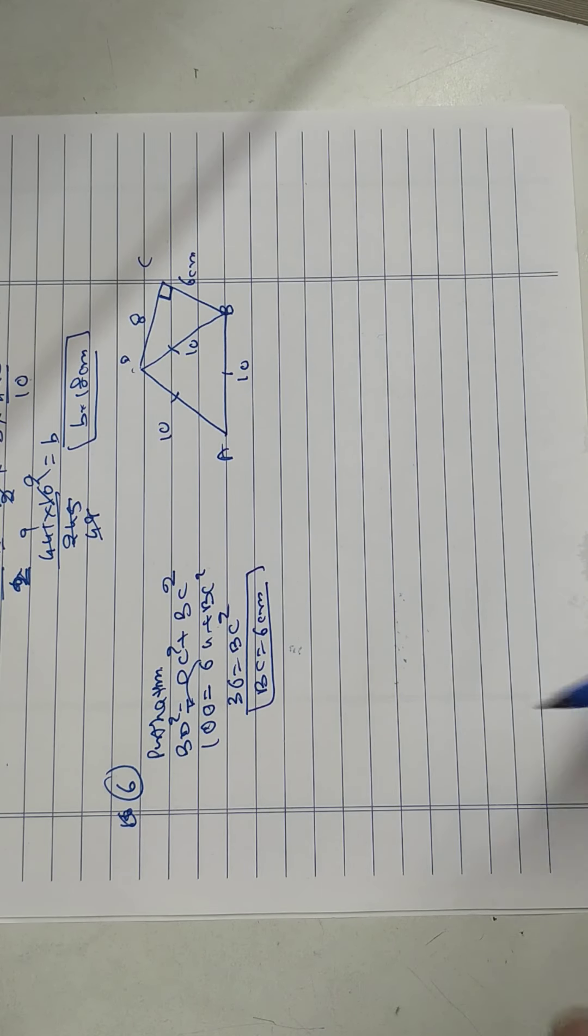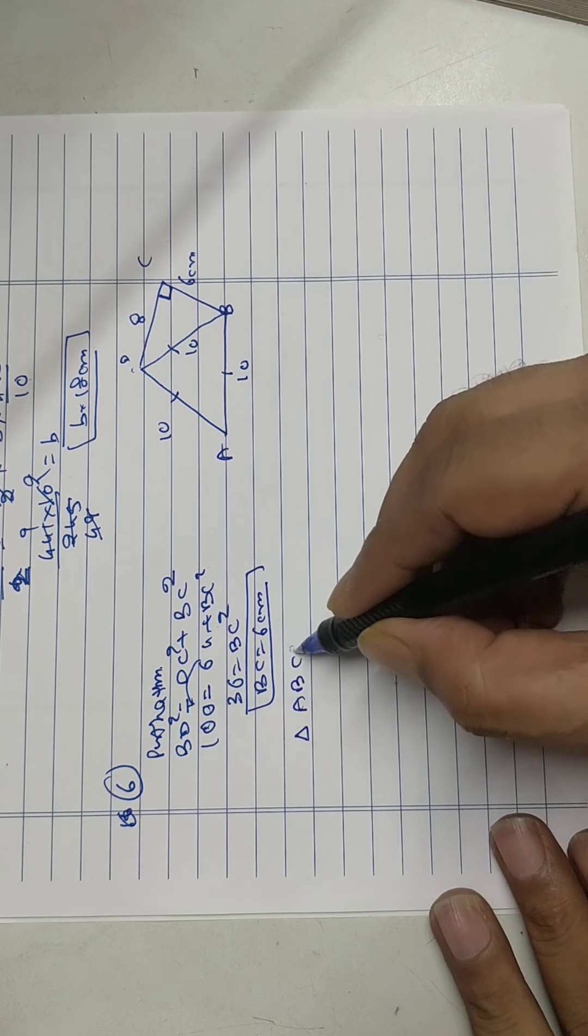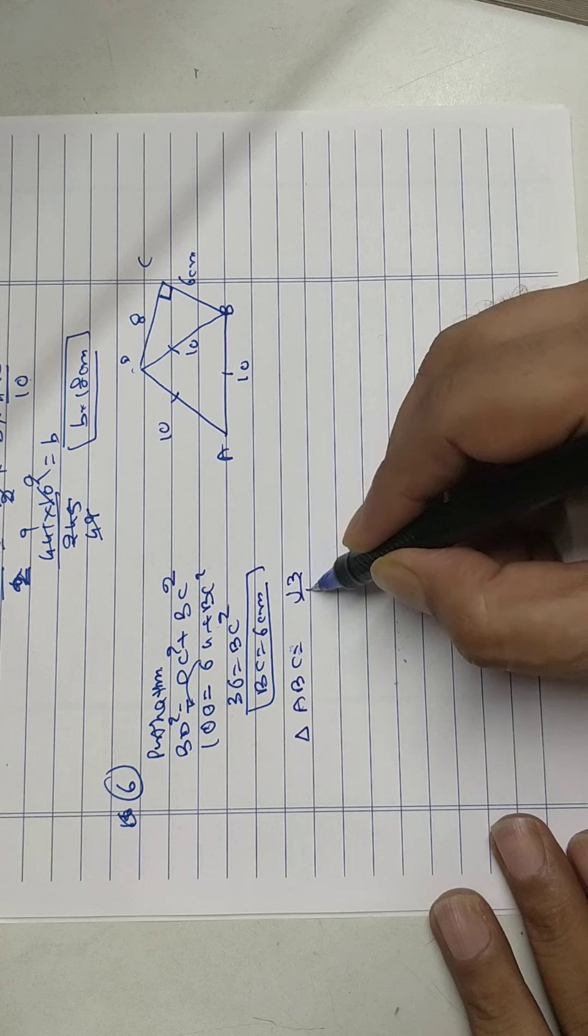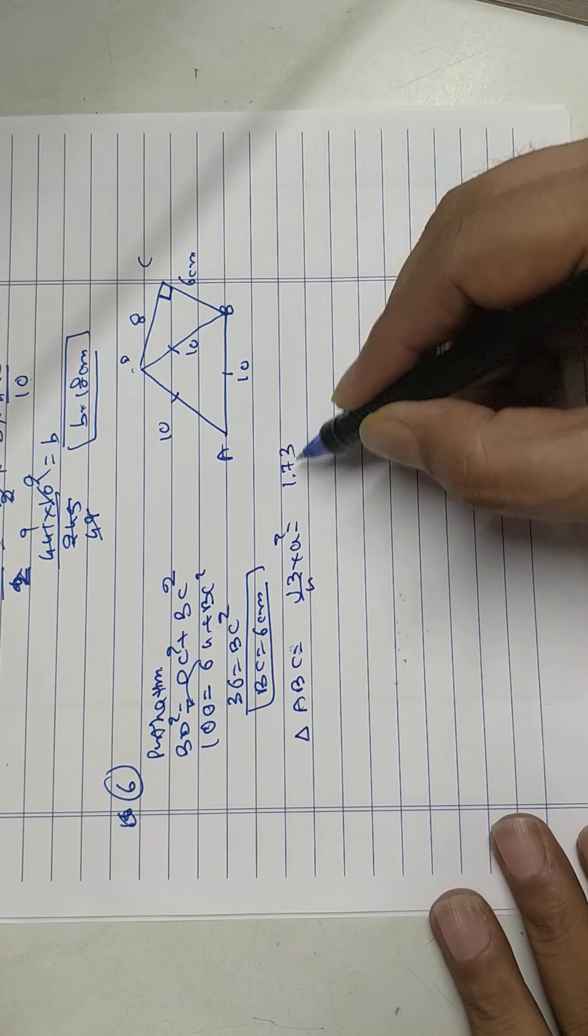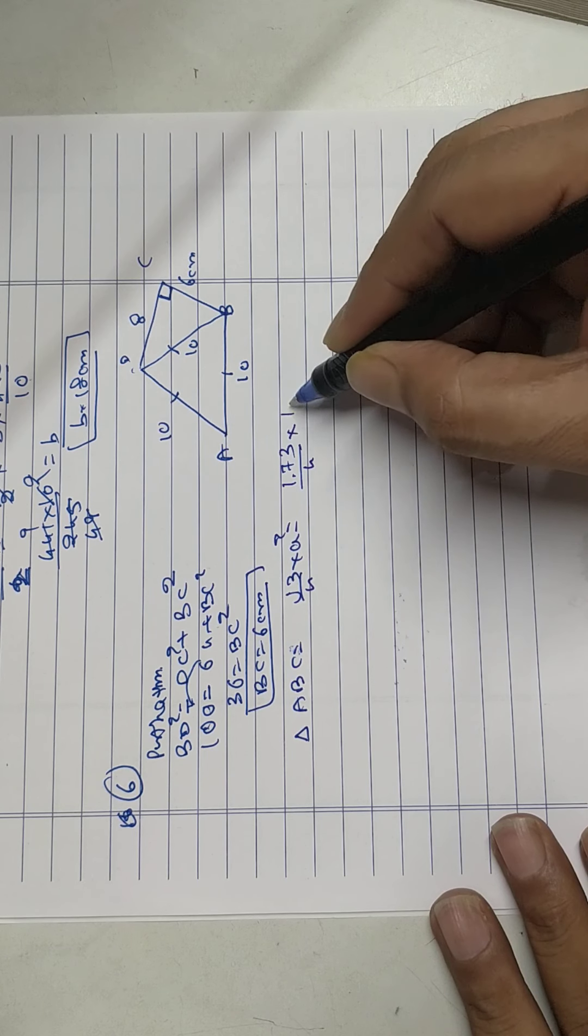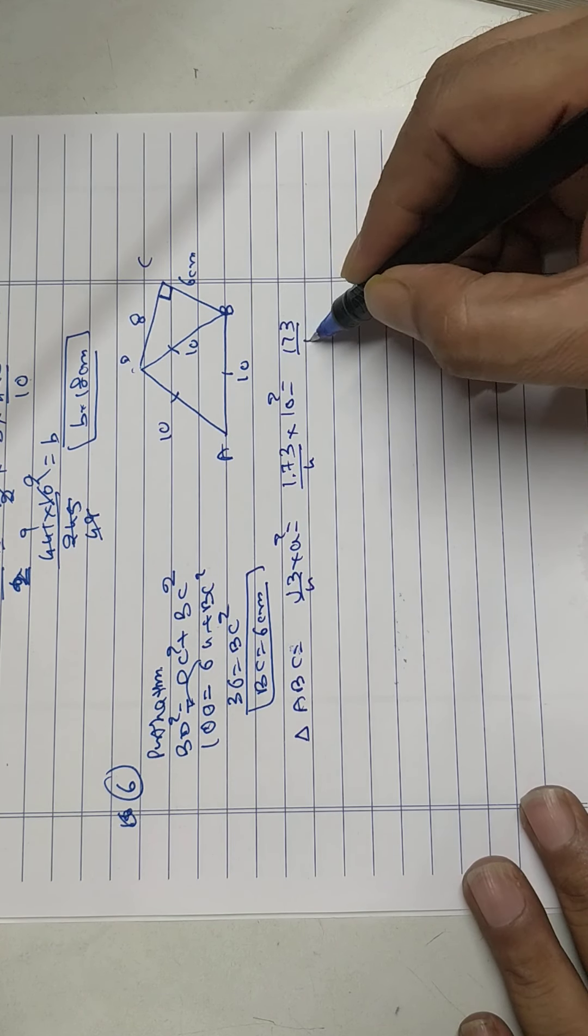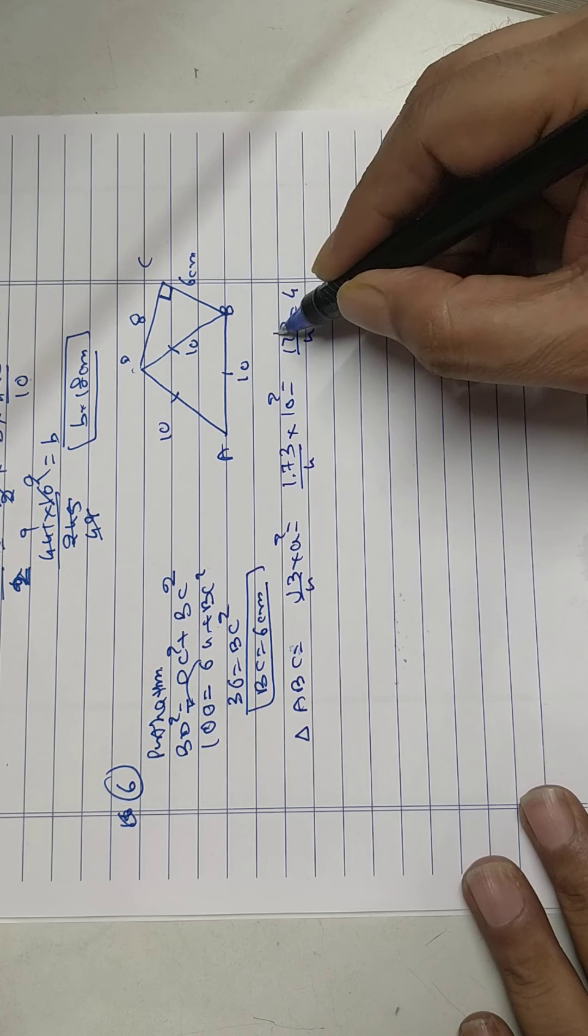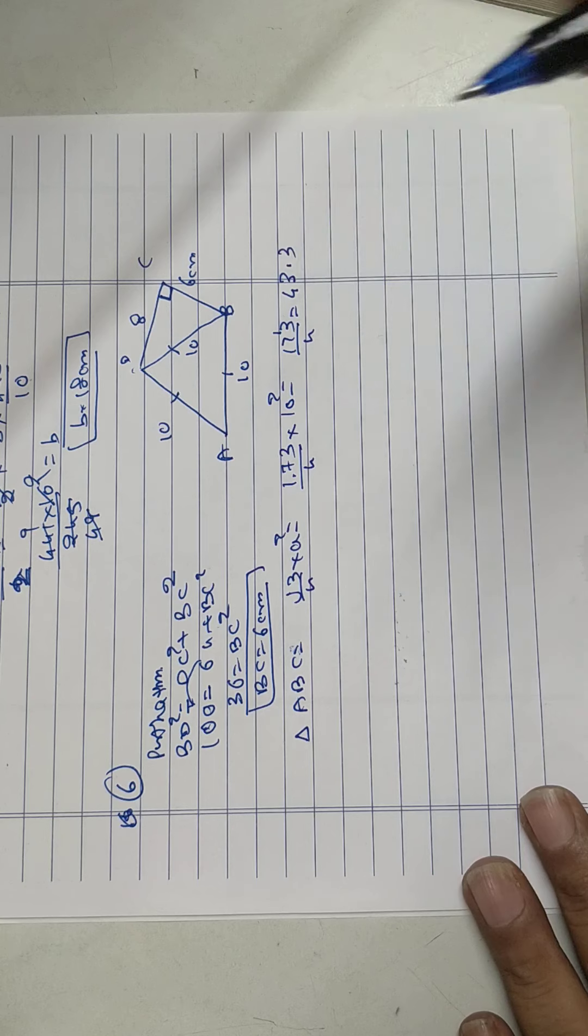First we'll find area of triangle ABC. Root 3 upon 4 into side square. 1.73 upon 4 into 10 square. 173 upon 4, 4 into 4 is 16, 4 into 3 is 12. 43.3.